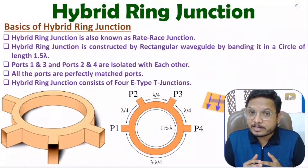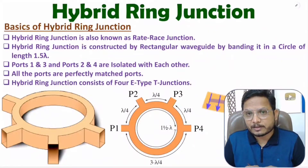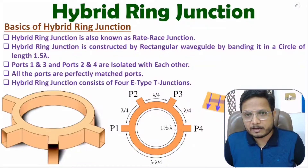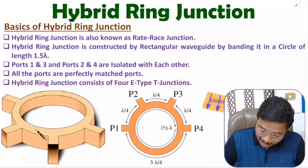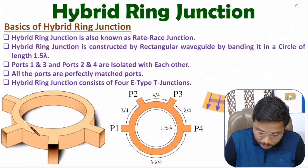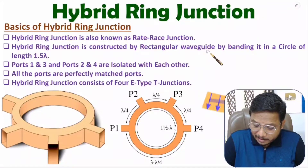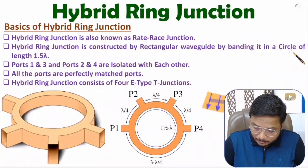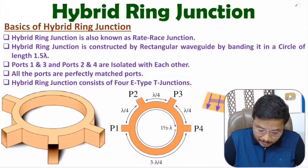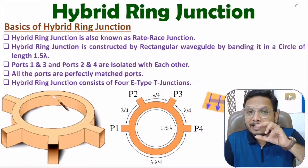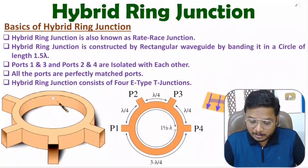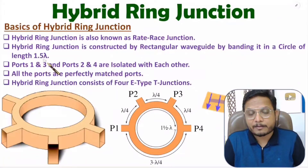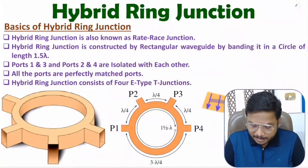Hybrid ring junction is also known as rat race junction. The structure is formed using a rectangular waveguide — we bend the rectangular waveguide in the form of a circle to create the hybrid ring junction. The length of that circle is 1.5 lambda.